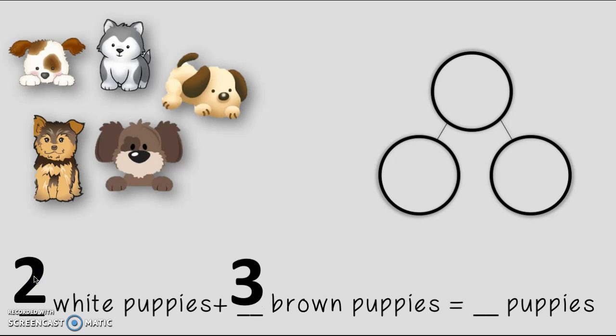Perfecto. And then how many puppies are there all together? You could count up three and then count up two. Three, four, five or you could use your picture to help you. One, two, three, four, five. There are five puppies all together.